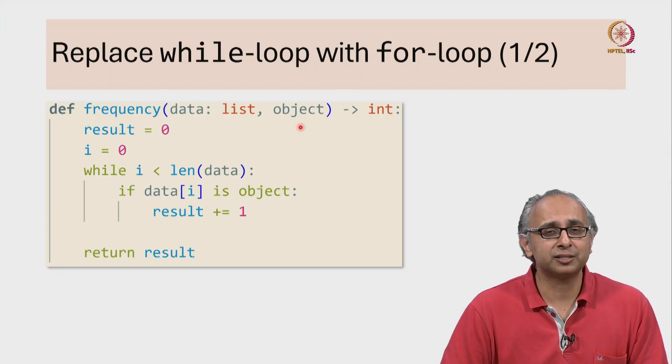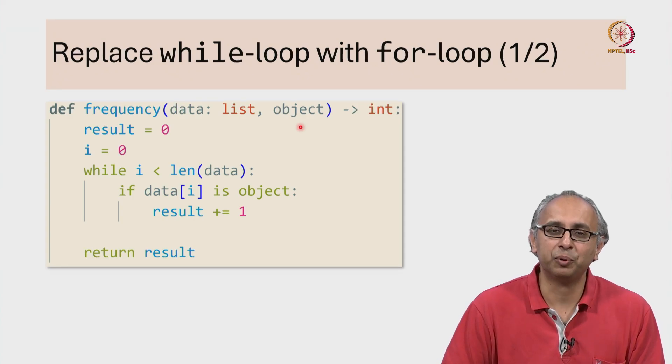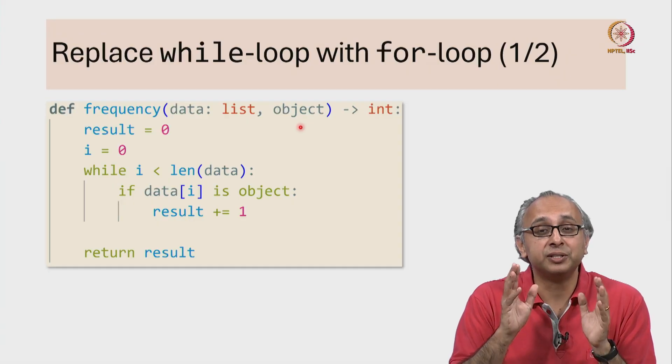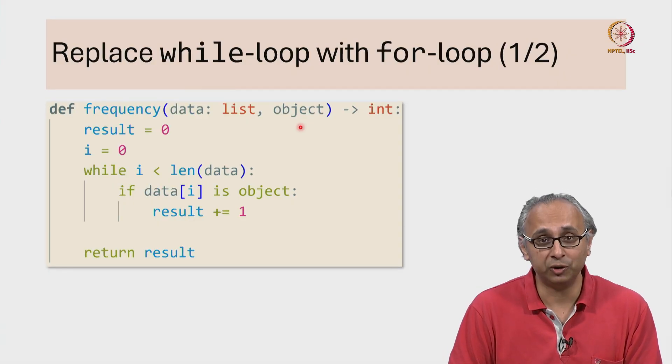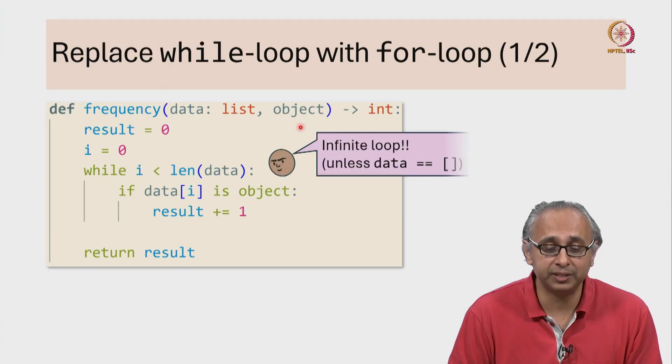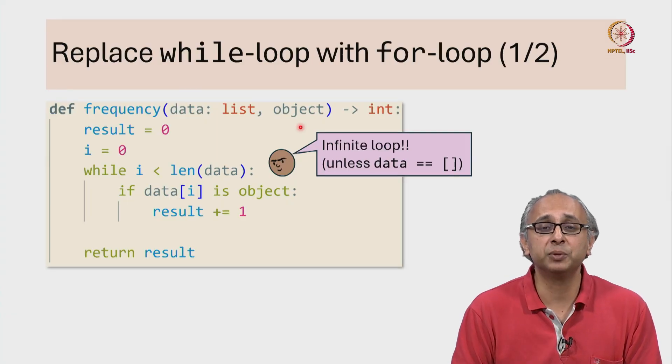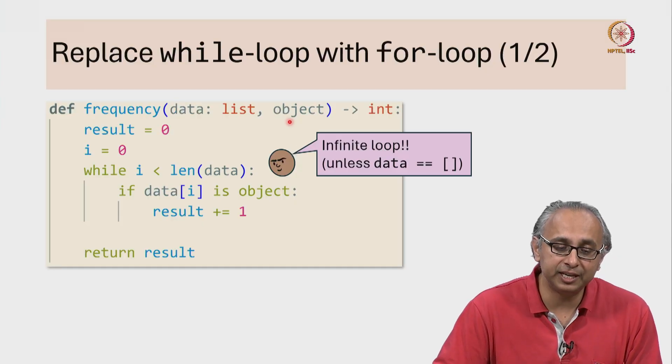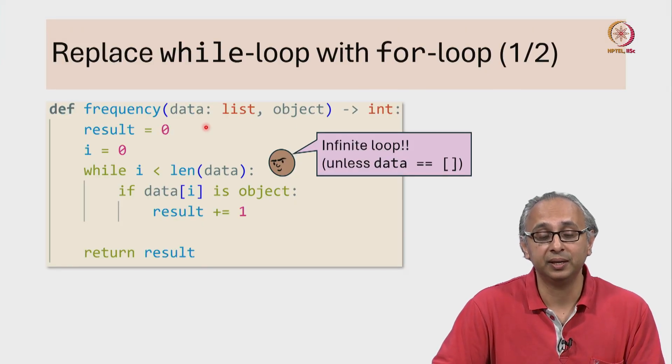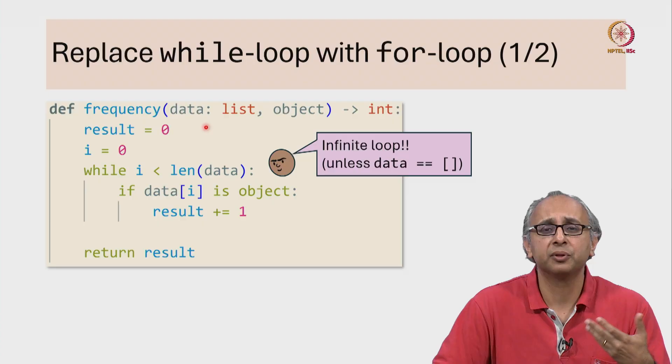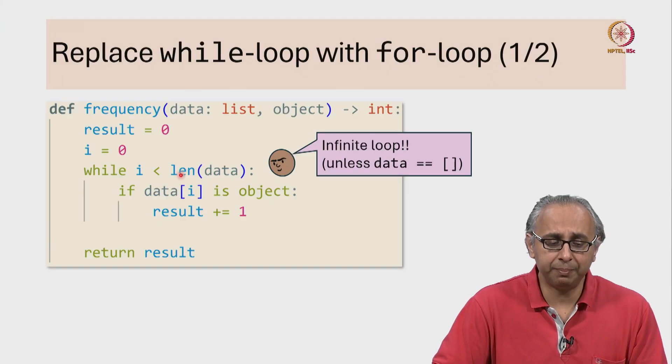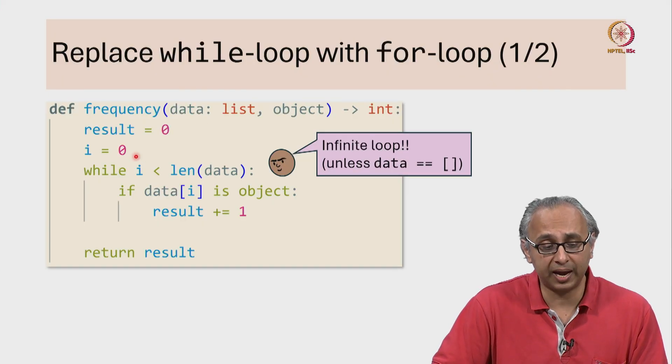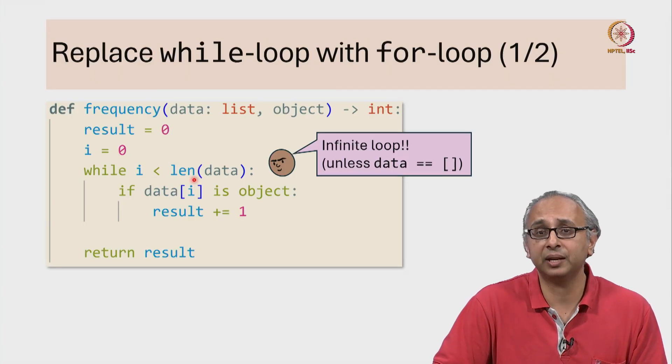Now our friend is paying close attention to this code and they realize something very important. This is actually one of the dangers of using while loops. Our friend points out that this while loop is potentially infinite. In particular, if the given list data is non-empty, let's say it has length 3, then we will come in here. This condition will be true because i is initialized to 0 and 0 is less than 3, the length of this list.